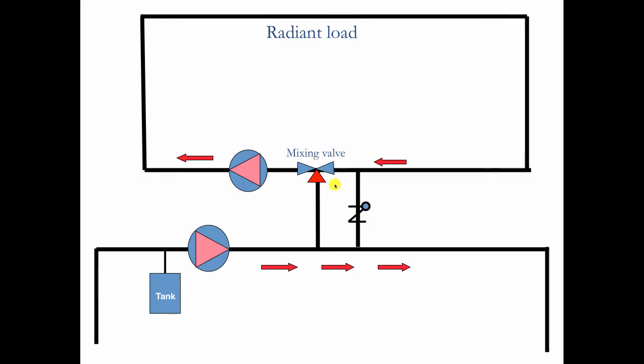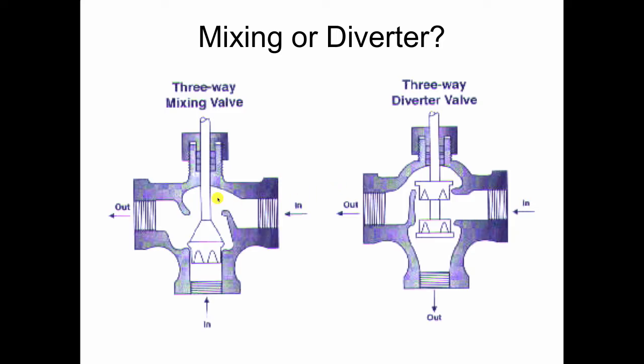So the way we get around that is, rather than use a three-way mixing valve, we're going to use a diverter valve. So this is a three-way mixing valve. It has two ways in, hot and cold, and one way out mixed. Two ways in, one way out.